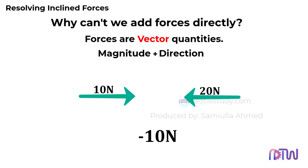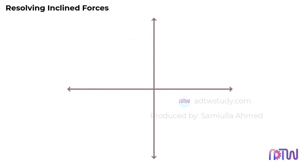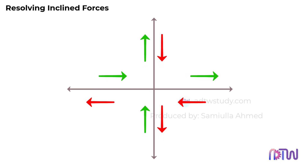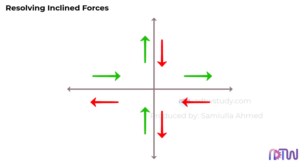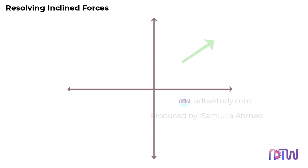Adding forces acting vertically and horizontally is straightforward. We consider the XY plane, where forces acting to the right are positive and those to the left are negative. Similarly, forces acting upward are positive and those acting downward are negative. This convention remains consistent regardless of the placement of the forces, as long as they are in vertical or horizontal directions. However, if a force acts in a random direction on this plane, we need to resolve it.